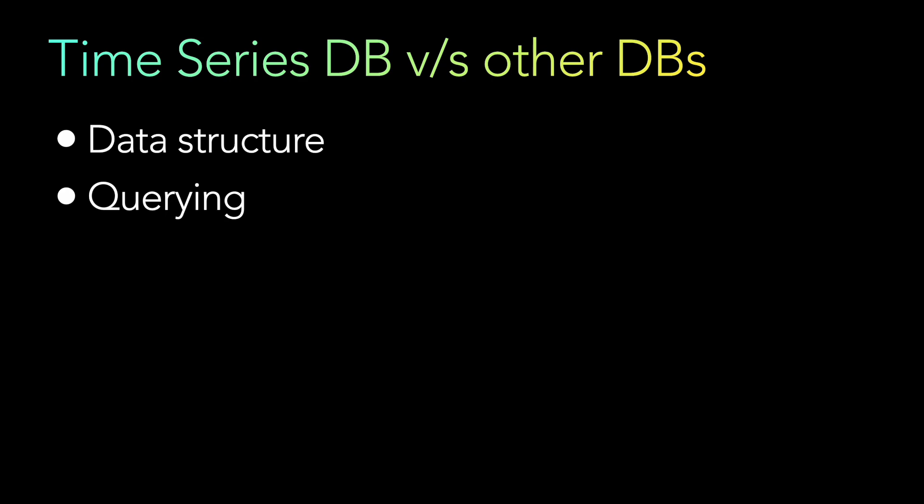Next is querying — time series databases have specialized query languages and APIs, like the Facebook Prophet model example, which are optimized for time series data. They often support window functions, aggregations, and filtering based on time ranges, all built into the libraries. Next is performance — because they are optimized for time-based data, time series databases are often faster and more efficient at querying and analyzing large volumes of time series data than general-purpose databases.